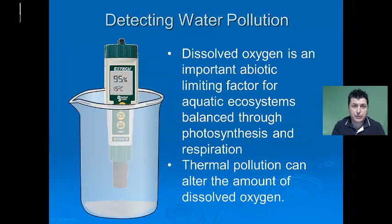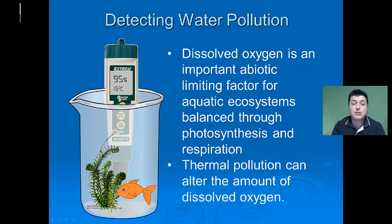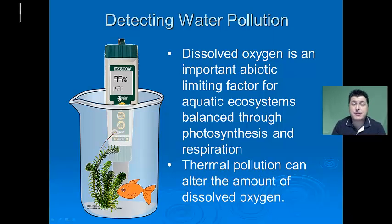There are many ways to detect water pollution. One thing we look at is how much dissolved oxygen is present in a water sample. Dissolved oxygen is an important abiotic limiting factor for aquatic ecosystems — it's how much oxygen is available and dissolved in that body of water for use by consuming organisms. This dissolved oxygen is kept in balance by the interplay between photosynthesizing water plants, algae, and bacteria, and consumers like fish. One thing that can disrupt dissolved oxygen levels is thermal pollution.